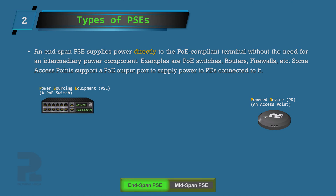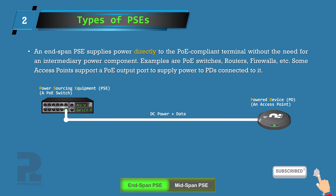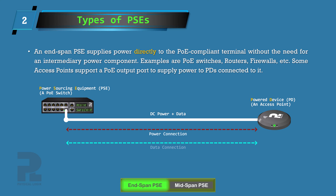For the first scenario, we'll consider an end-span PSE, which is usually a network switch, router, firewall, or any network device with PoE-capable ports. They deliver power directly to powered devices such as an access point, an IP camera, or an IP phone, without the need for an intermediary component.